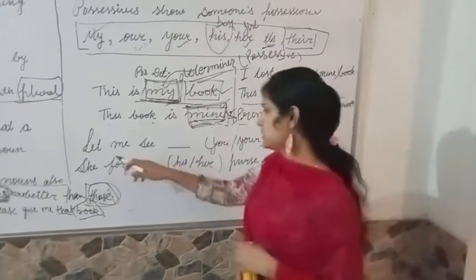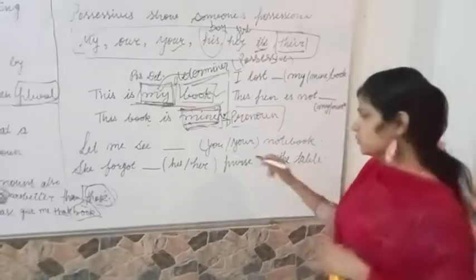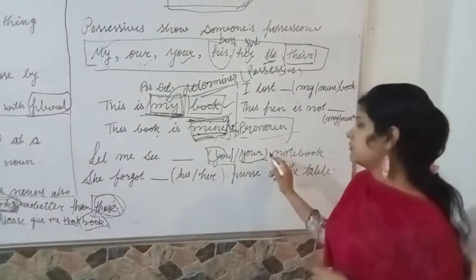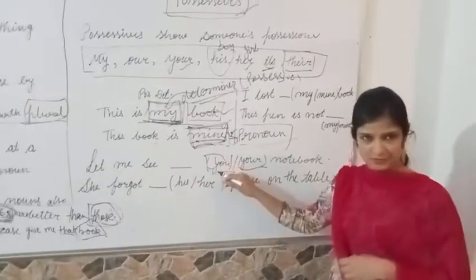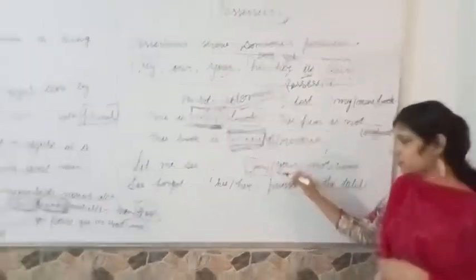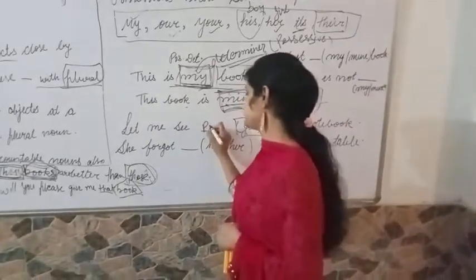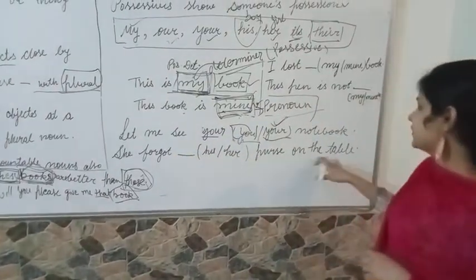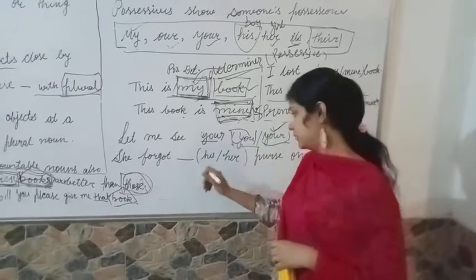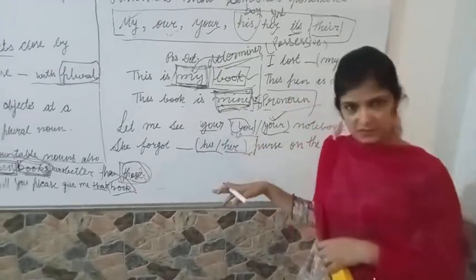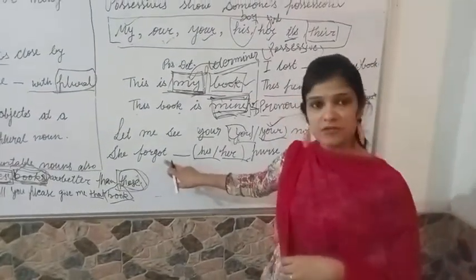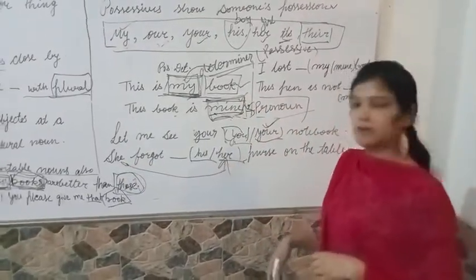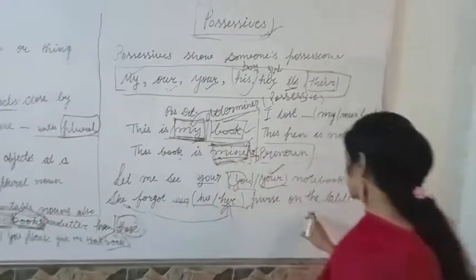Let me give you some more examples. 'Let me see your notebook' — here, 'your' or 'you'? It should be 'your notebook,' because the notebook belongs to you, so we use the possessive determiner 'your.' Another example: 'She forgot her book on the table.' She is a girl, and the possessive determiner for she is 'her.' So: 'She forgot her book on the table.'